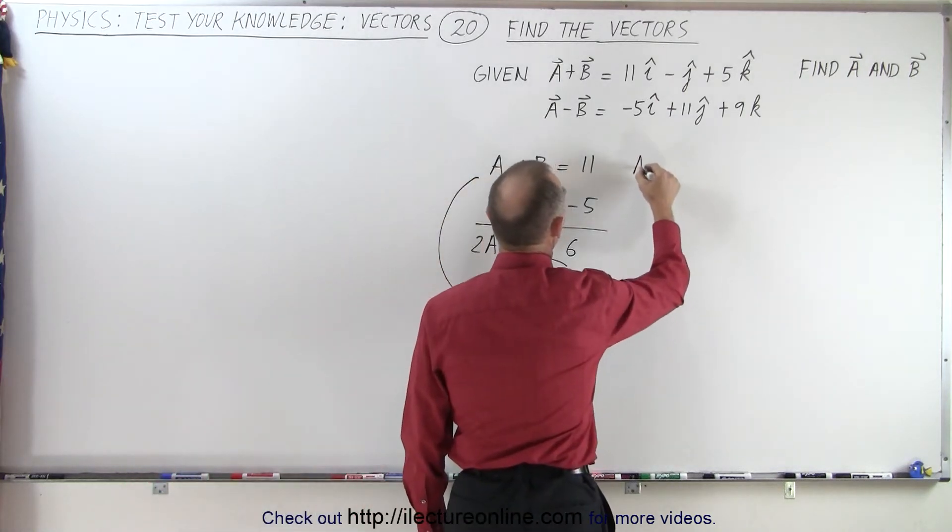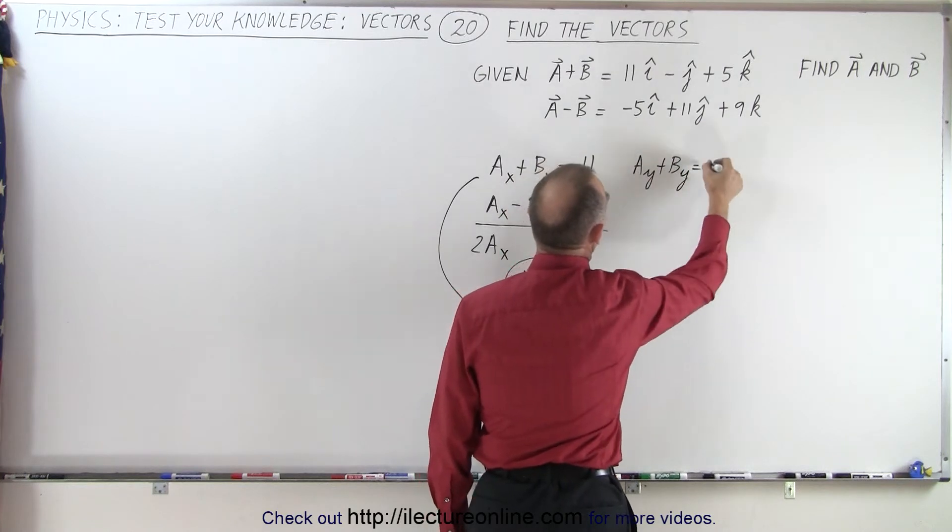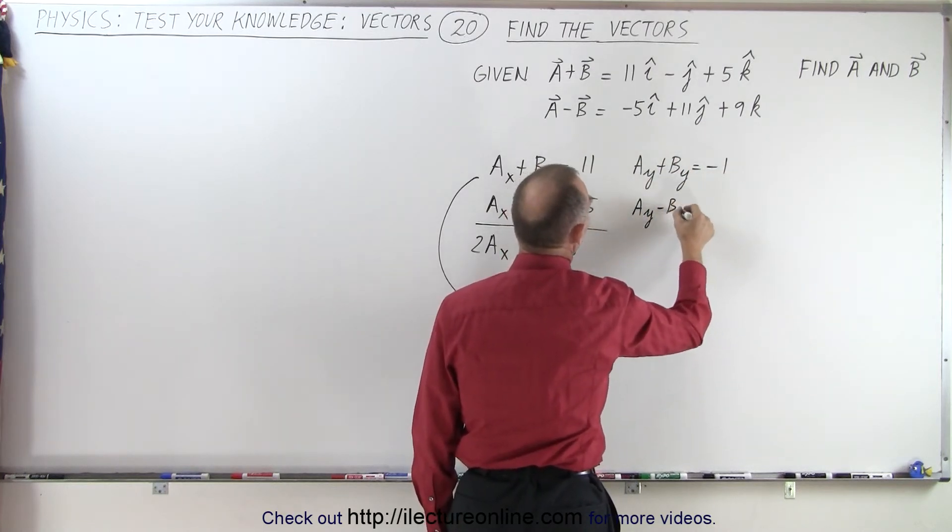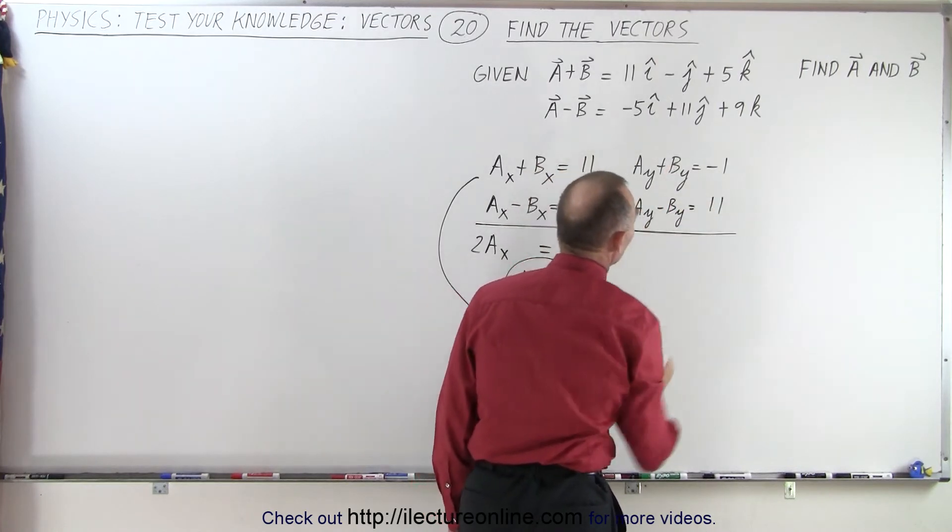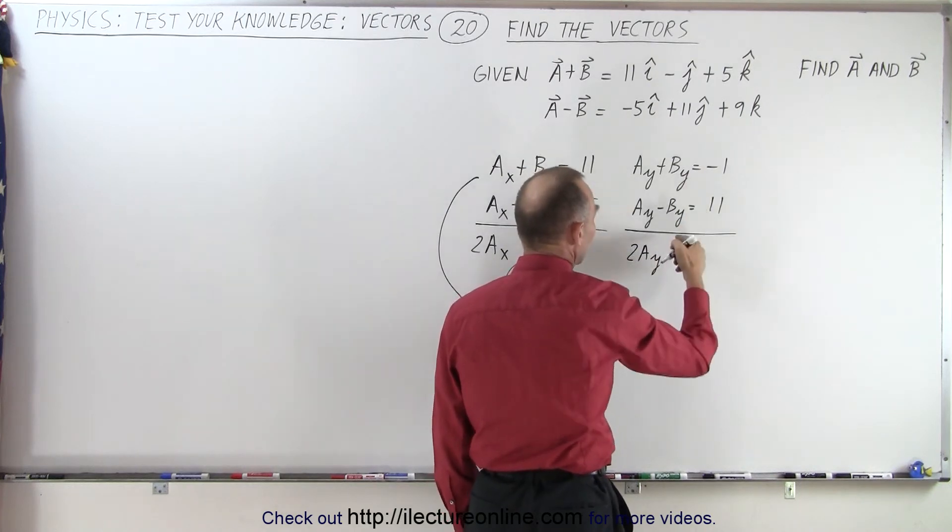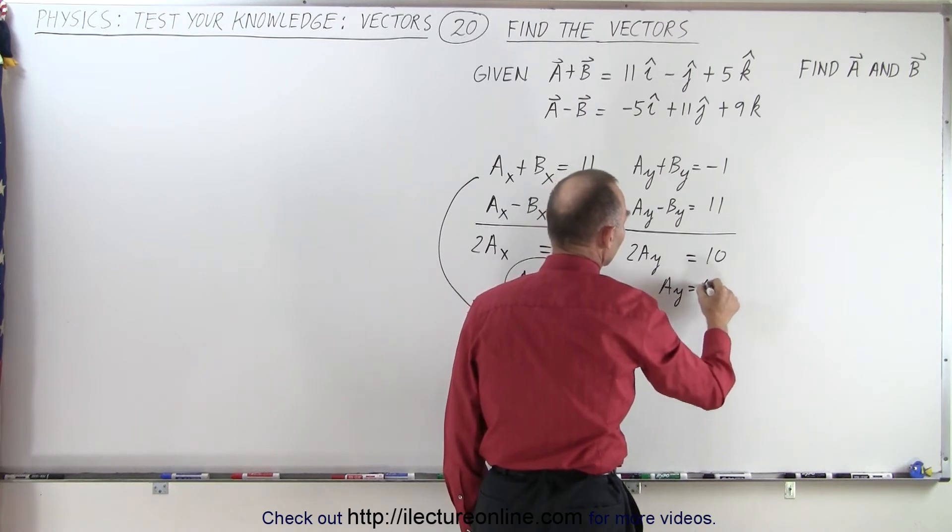We can say that a sub y plus b sub y is equal to negative 1, and a sub y minus b sub y must be equal to positive 11. If we now add those two equations together, we get 2 a sub y, the b sub y's drop out, is equal to 10, so a sub y is equal to 5.